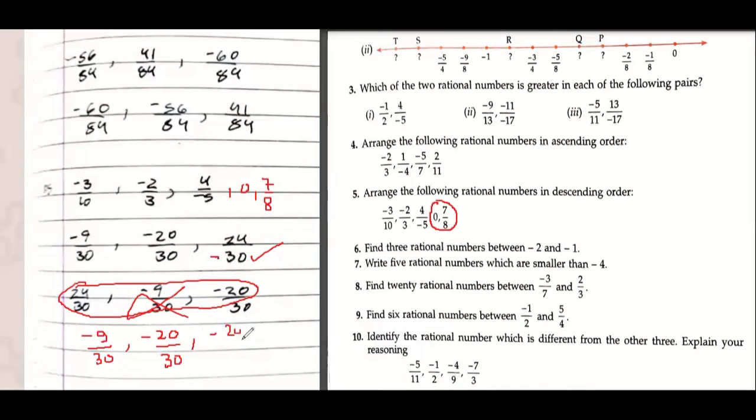And then it would be minus 24 upon 30 isn't it but before that there will be seven of sabse bada. Seven upon eight and then it will be a zero.